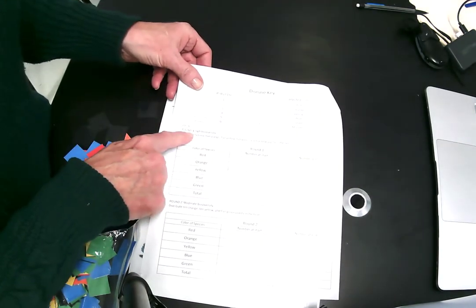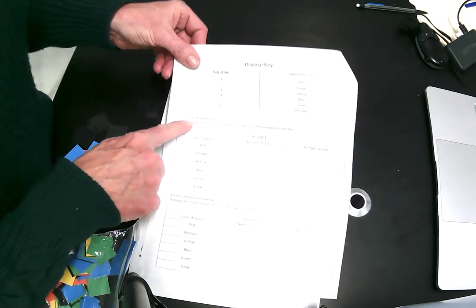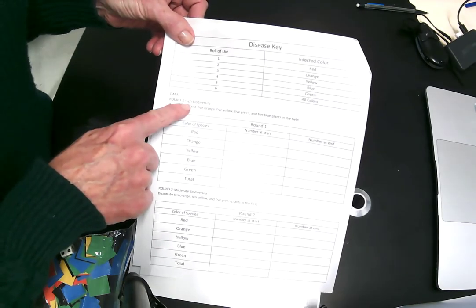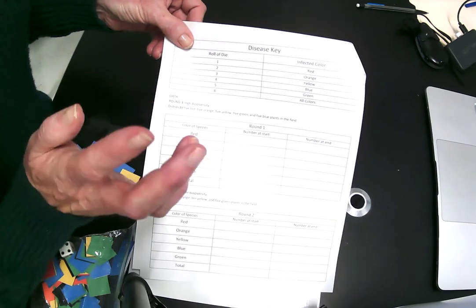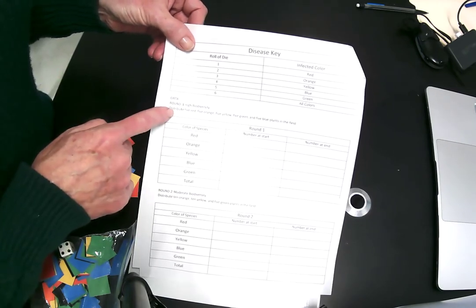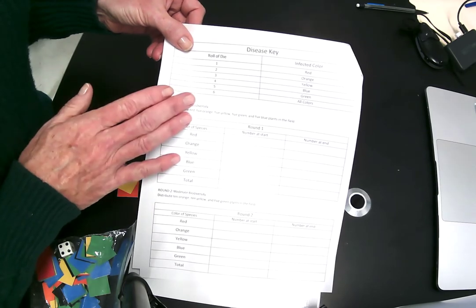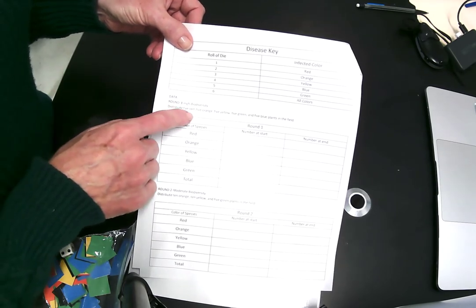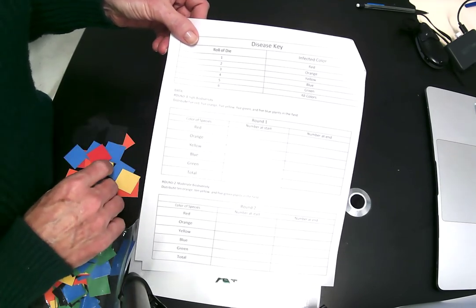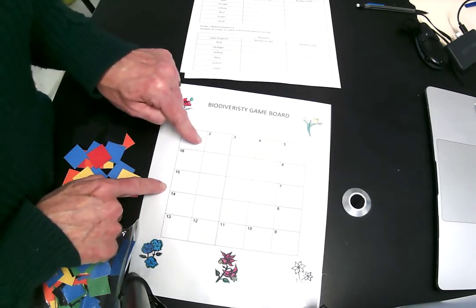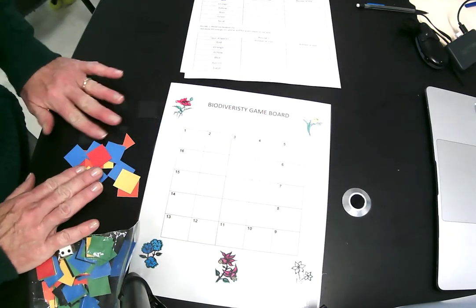So for the first round, the instructions are this is a high biodiversity field, a very biodiverse field, meaning that there is an equal distribution for each species. So you need to distribute however you would like, five red, five orange, five yellow, five green, and five blue plants in the field, but only in the numbered squares around the edge.